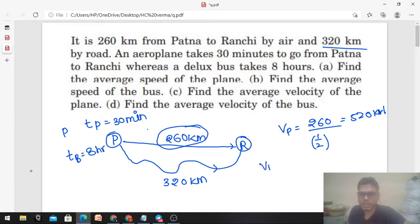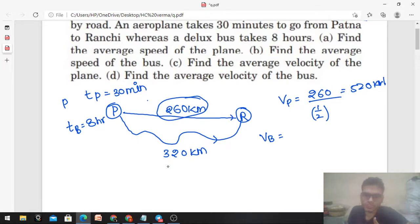Part B: Find the average speed of the bus. What is the average speed of the bus? Distance upon time. What is the distance traveled by the bus? 320 kilometers upon what is the time taken? 8 hours. So that is coming out to be 40 kilometer per hour.